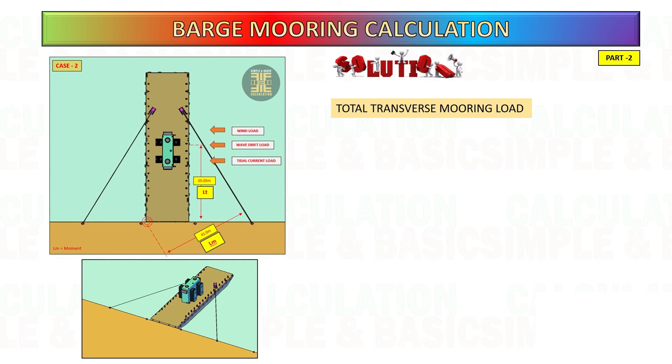Calculate the mooring wire capacity: total mooring load multiplied by half of the barge width, divided by the parallel distance from the mooring line to the front edge of the barge.